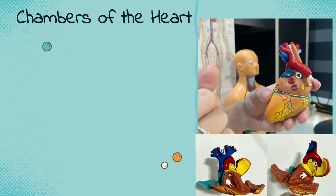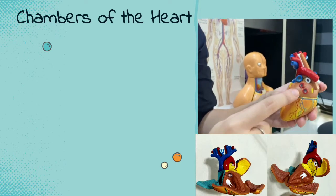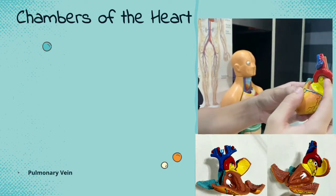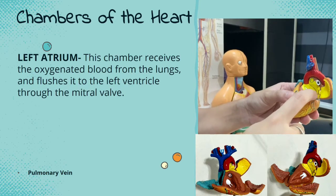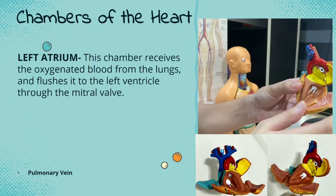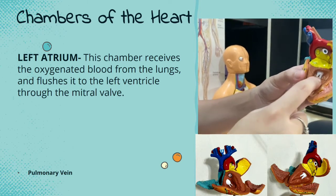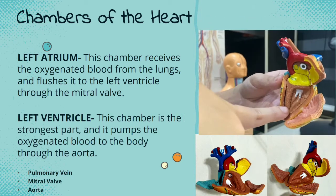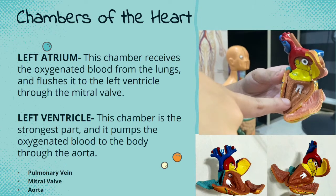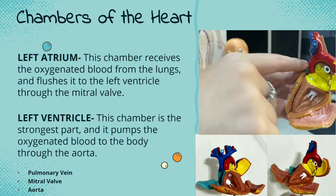When the oxygenated blood from the lungs returns to the heart, it passes through the pulmonary vein. The left atrium receives the oxygenated blood from the lungs and flushes it to the left ventricle through the mitral valve. The left ventricle is the strongest chamber of the heart and it pumps the oxygenated blood to the body through the aorta.